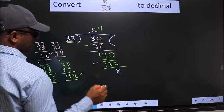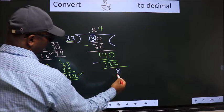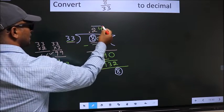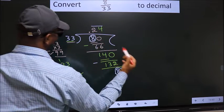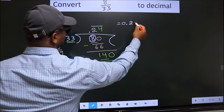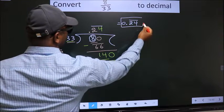Now, here you see - here we had 8, and we got 8 again. That means we get a bar on these two numbers. Therefore, our answer is 0.24 with a bar on these two numbers. This is our answer.